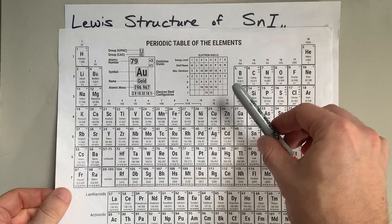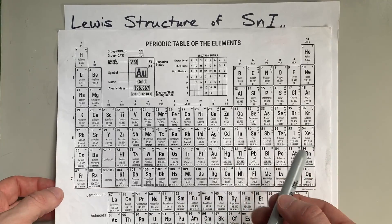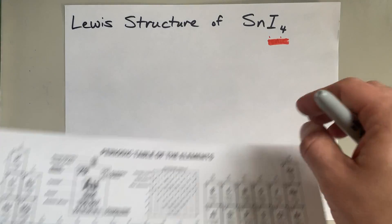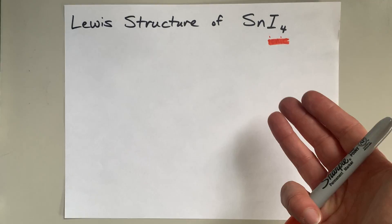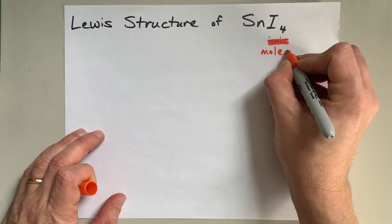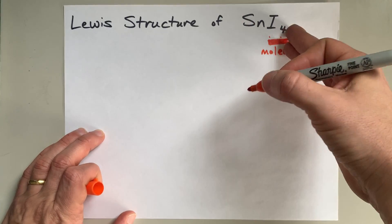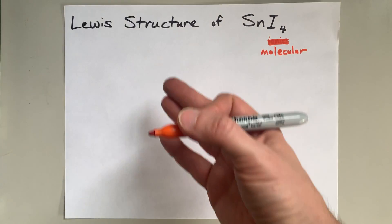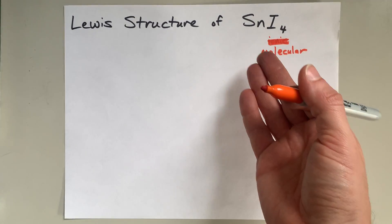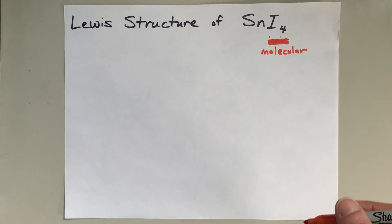Now, I know what you're thinking. Tin is a metal and iodine is a non-metal, and therefore it's probably an ionic compound. But it turns out that they don't have different enough electronegativities for that to be the case. This molecule — I gave it away — is a molecular compound, and the tin and the iodines actually share electrons. So we're going to draw this Lewis structure the same way we would draw it for carbon tetraiodide or methane or something like that.